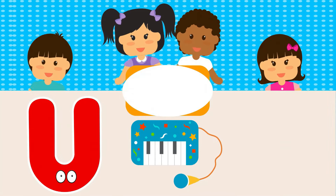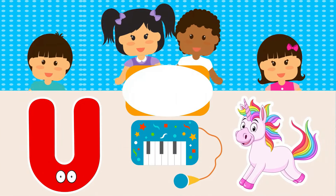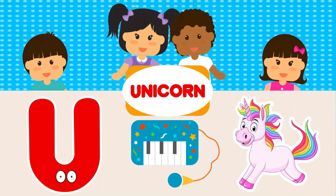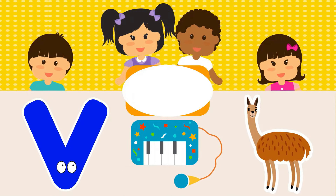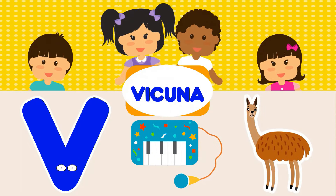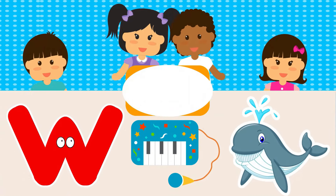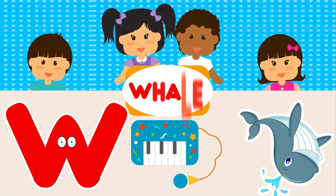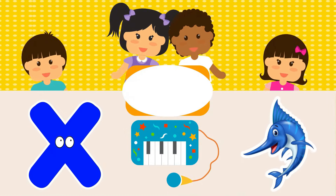U is for Unicorn. U-Unicorn. V is for Vicuña. V-Vicuña. W is for Whale. W-Whale.